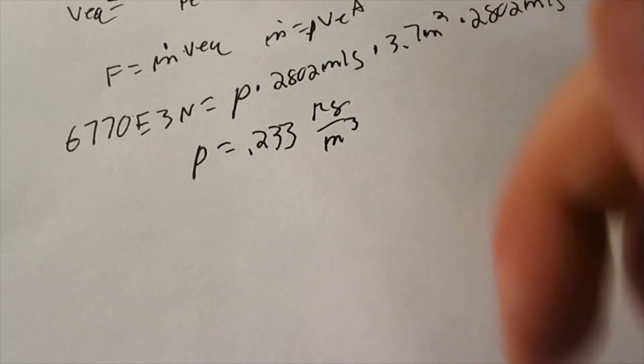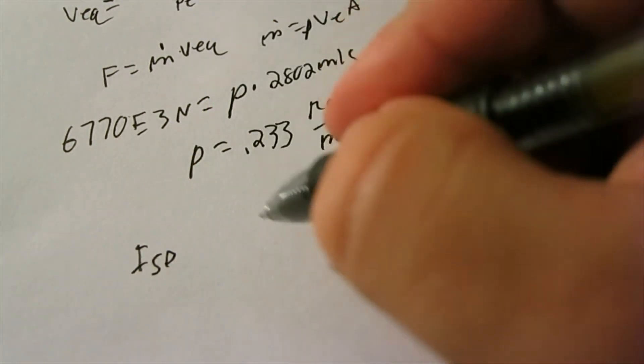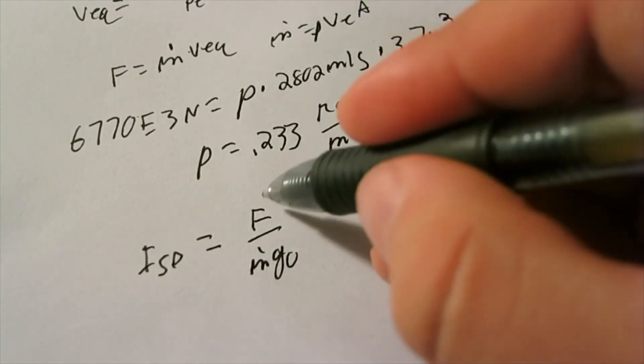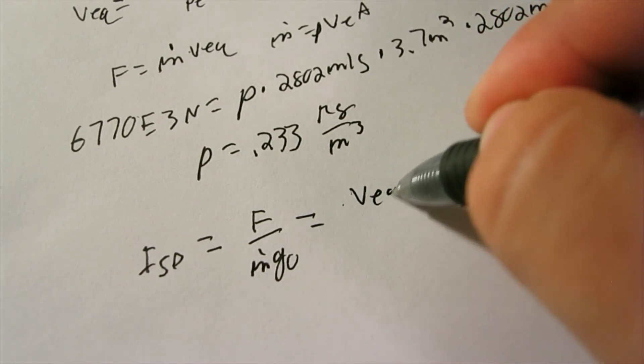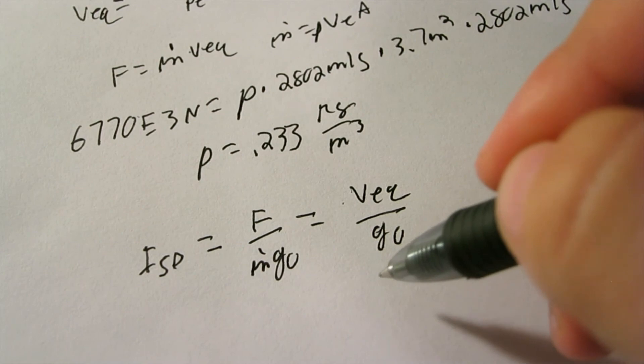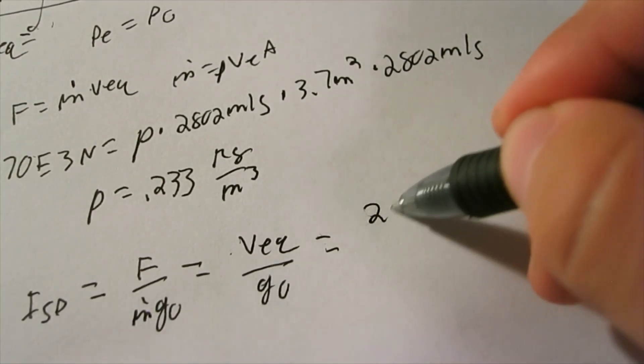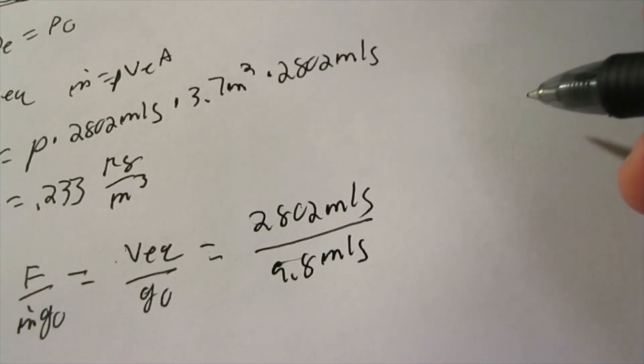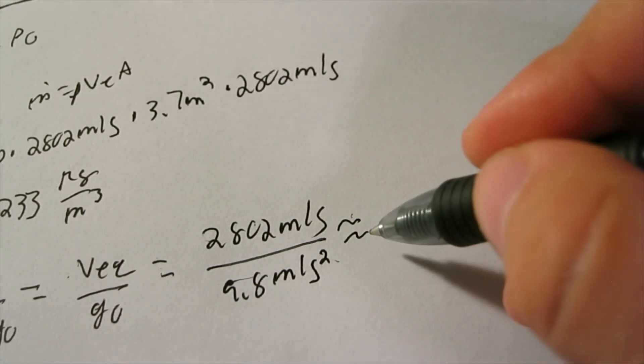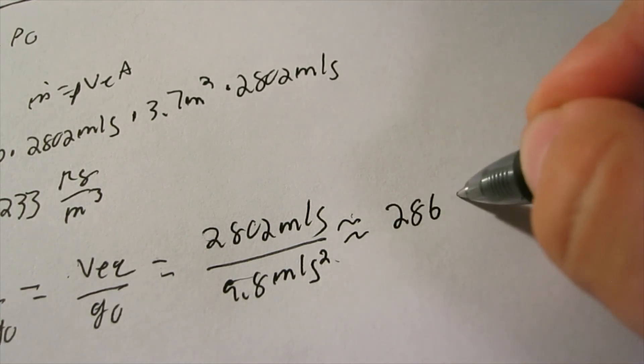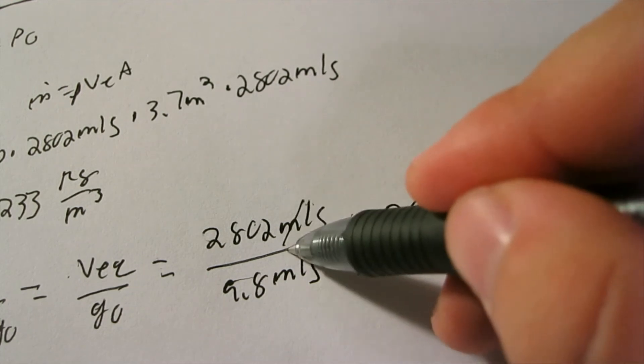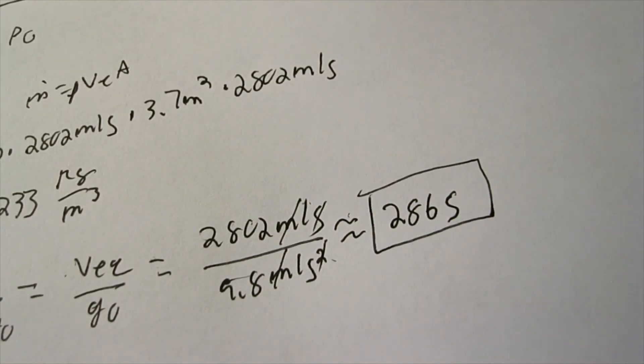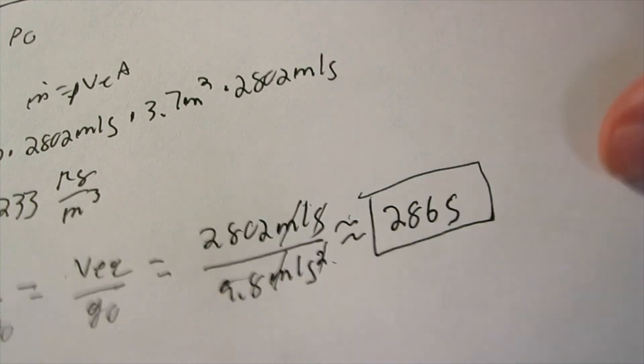Now we want to talk about specific impulse. The equation for that is ISP equals force divided by M dot times gravity, which then can also be written as velocity equivalent divided by gravity. So again, for the F-1 rocket engine, our equivalent velocity is 2,802 meters per second divided by 9.8 meters per second squared. And that leaves us with a specific impulse, the units are seconds, 286 seconds, because meters cancel, seconds cancel, that goes up to the top. 286 seconds, which is about in the range if you looked up a value for the F-1 rocket engine.